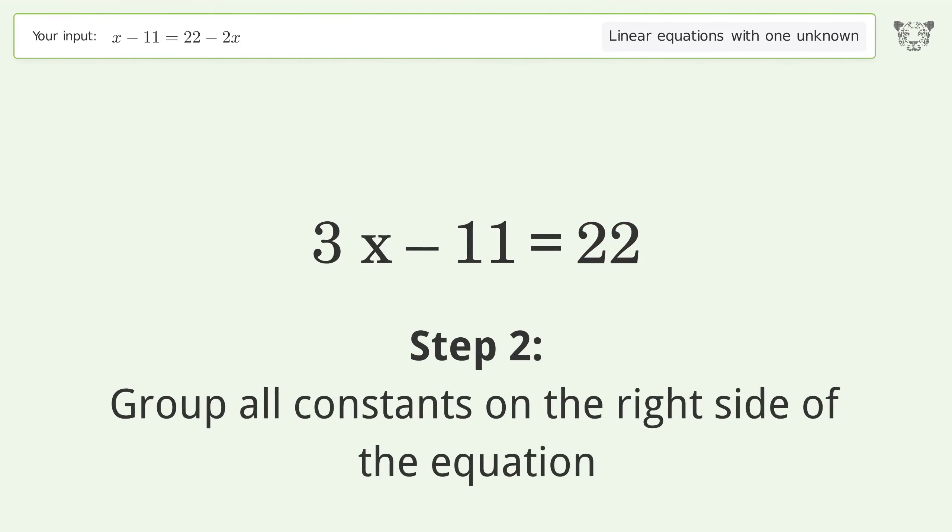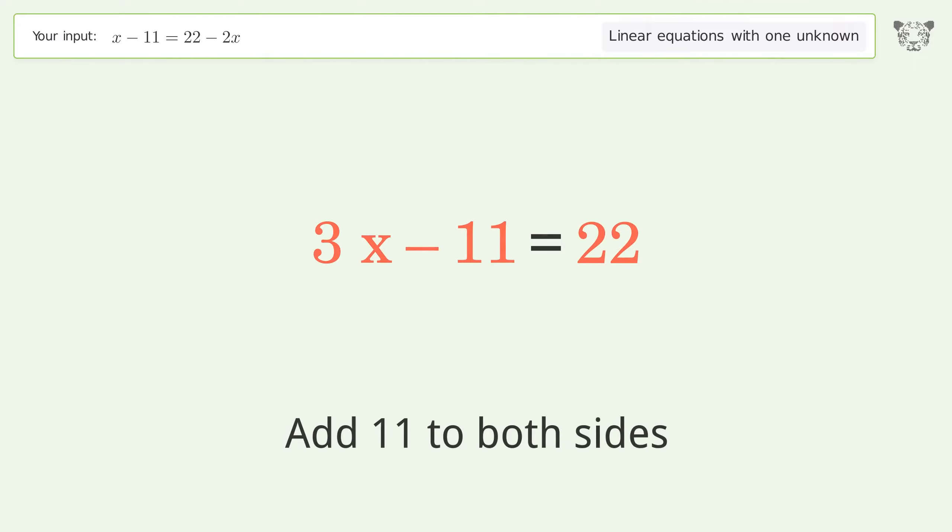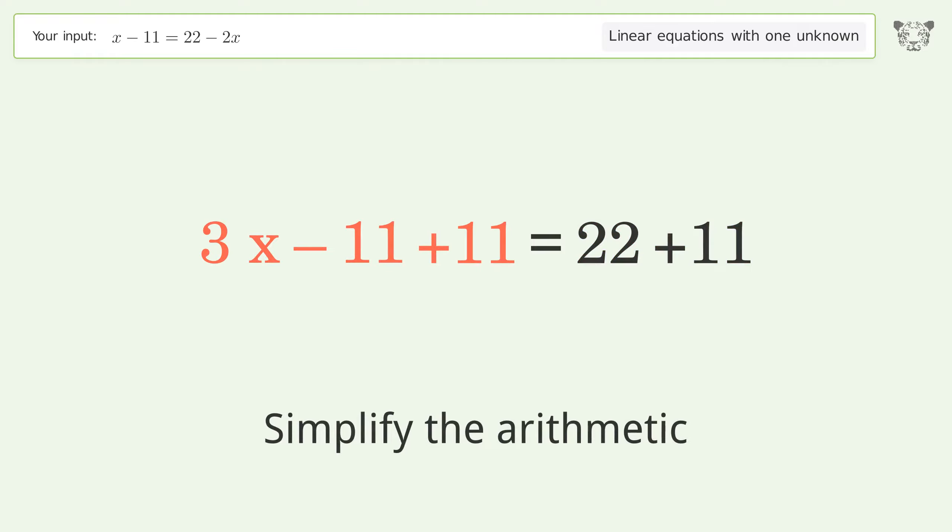Group all constants on the right side of the equation. Add 11 to both sides. Simplify the arithmetic.